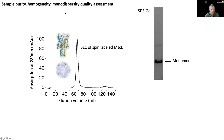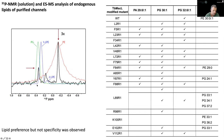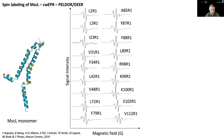An advantage of PELDOR is you only need one label rather than two as in FRET, and the gold-standard MTSSL spin label is close in size to tryptophan, making it minimally disruptive. We tested over 20 sites on MscS, and through a rigorous process — purification, spin labeling, purity and monodispersity checks — we selected functional constructs. We also used phosphorus NMR to identify specific lipids binding to detergent-solubilized samples and ESI-MS to confirm lipid preference but not specificity, consistent with the lipid movement model.